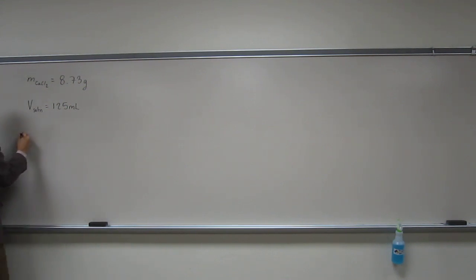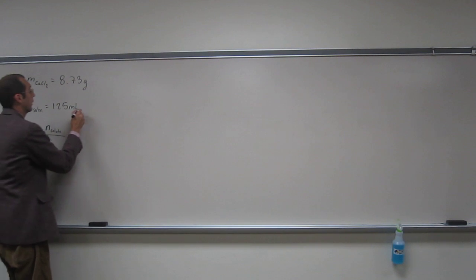So remember, what's the formula for molarity? Molarity equals the number of moles of the solute divided by the volume in liters of the solution. So we don't have these in those units, right? This is in grams, and this one's in milliliters, so we need to convert those.